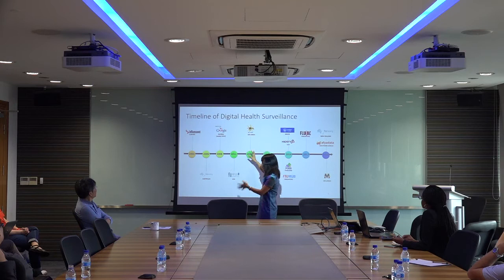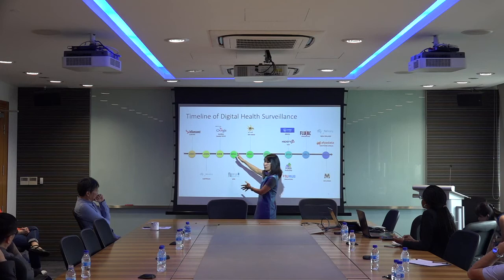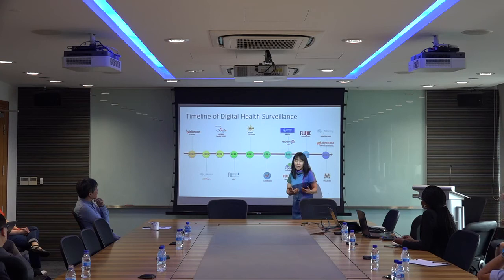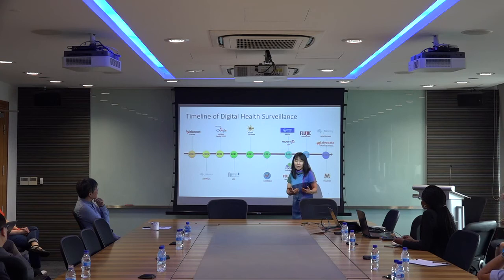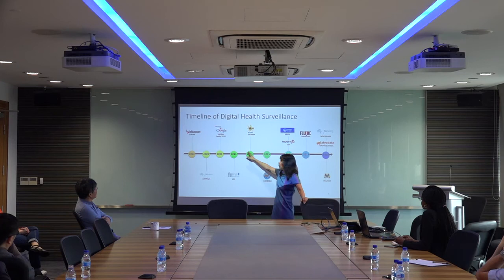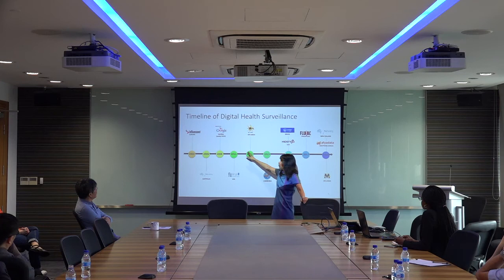I also highlight Google Flu Trends because it made a big splash — many people thought that all the information people typed in regarding flu would be useful for prediction, and there was a lot of interest. But in 2015 it stopped, as it was not able to predict flu in the same way as participatory surveillance. That happened between 2008 and 2015. I started work in this area around 2010–2011. As Sanjoy mentioned, malaria was what we were looking at first.